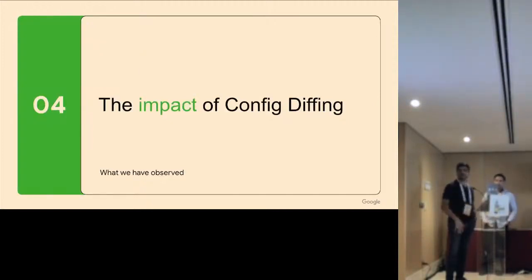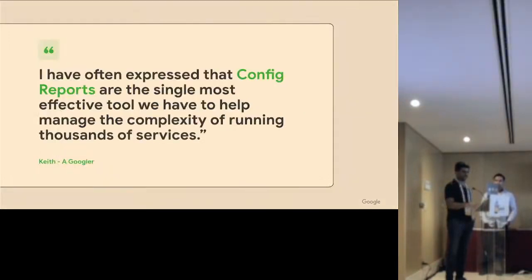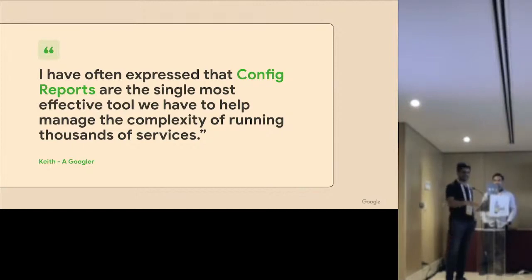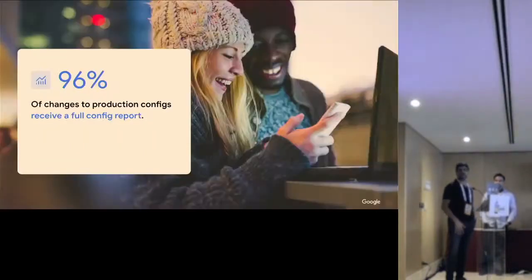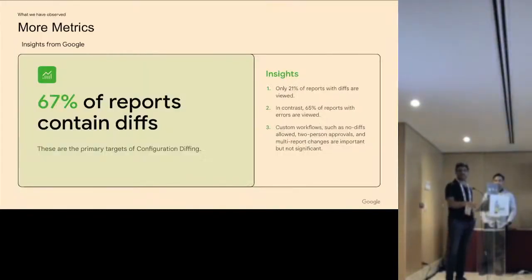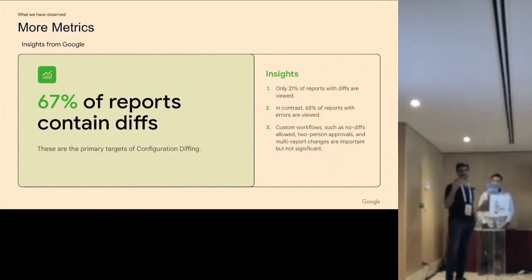The last part of this talk covers the impact of config diffing. First, an anecdote written by Keith, a developer, who said: 'I often express that config reports are the single most effective tool we have to help manage the complexity of running thousands of services.' In terms of numbers: config diffing reports are available for 96% of all config changes at Google — the remaining 4% involve teams with their own custom config systems we don't support. 67% of these reports contain diffs, meaning the majority have an intention to change something in production; the others are refactoring or cleanup that doesn't affect the final output.